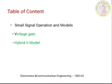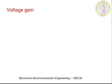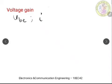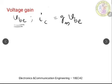Let us start with voltage gain — how to derive the voltage gain for the amplifier in discussion. We know that the applied input signal is nothing but VBE, and this VBE produces a proportional collector current given by IC = Gm × VBE.